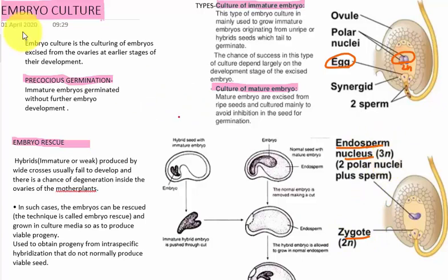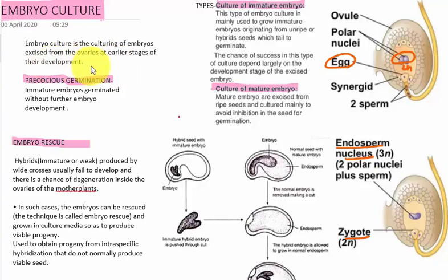So embryo culture is the culturing of embryos which are excised from the ovaries at the earliest stages of development. There are two types of embryo culture: first is the culture of the immature embryo, and second is the culture of the mature embryo.